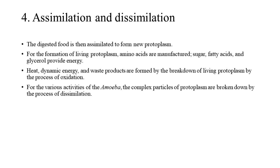Assimilation and Dissimilation: The digested food is then assimilated to form new protoplasm. For the formation of living protoplasm, amino acids are manufactured; sugar, fatty acids, and glycerol provide energy. Heat, dynamic energy, and waste products are formed by the breakdown of living protoplasm by oxidation. For the various activities of the amoeba, complex particles of protoplasm are broken down by the process of dissimilation.